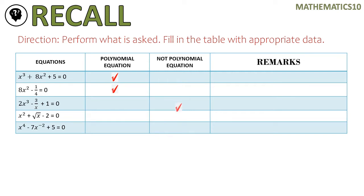For our third example, it is not a polynomial equation. Since it's not a polynomial equation, we need to put the reason why. Our reason is because there is a variable in the denominator. If a variable is written in the denominator in fraction form, that means the exponent of that variable is negative originally. That is why it is not a polynomial equation.